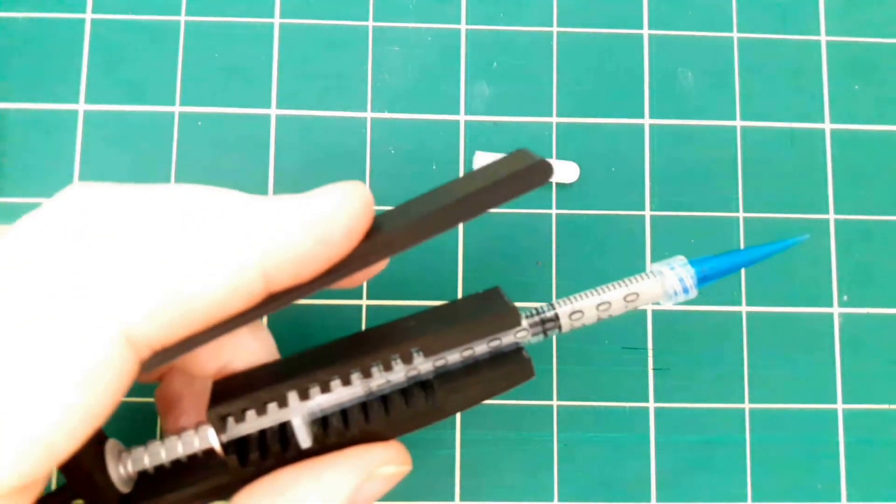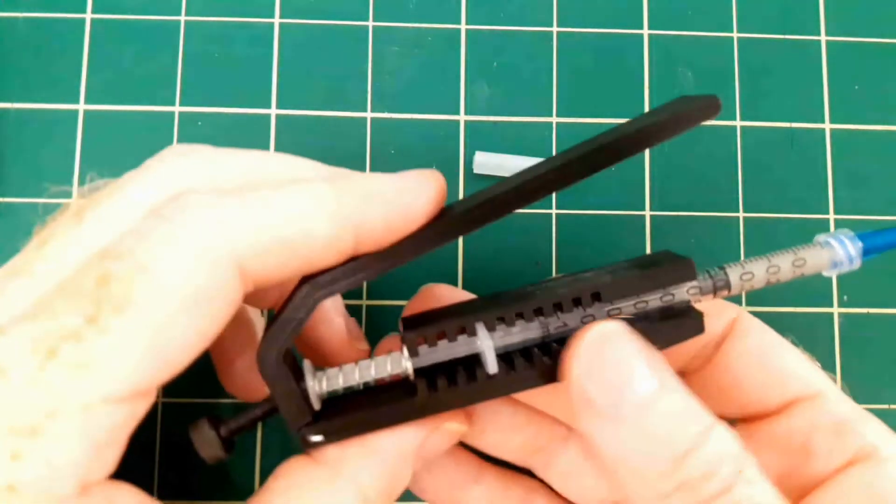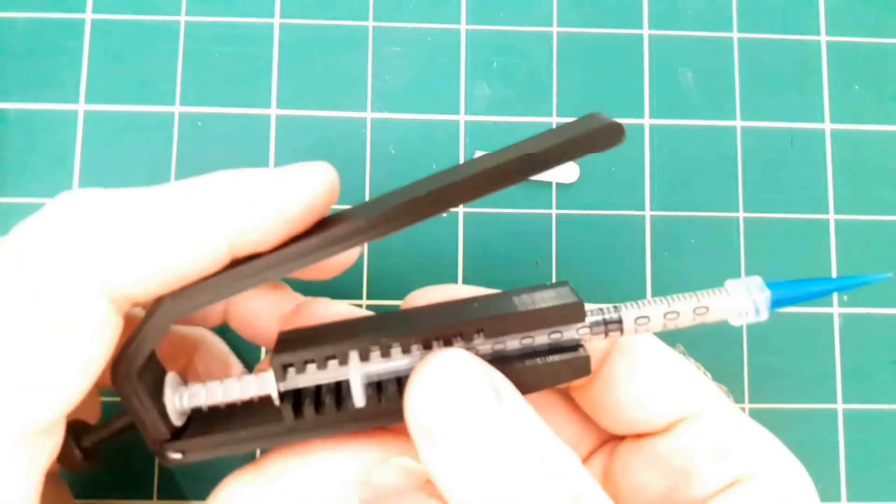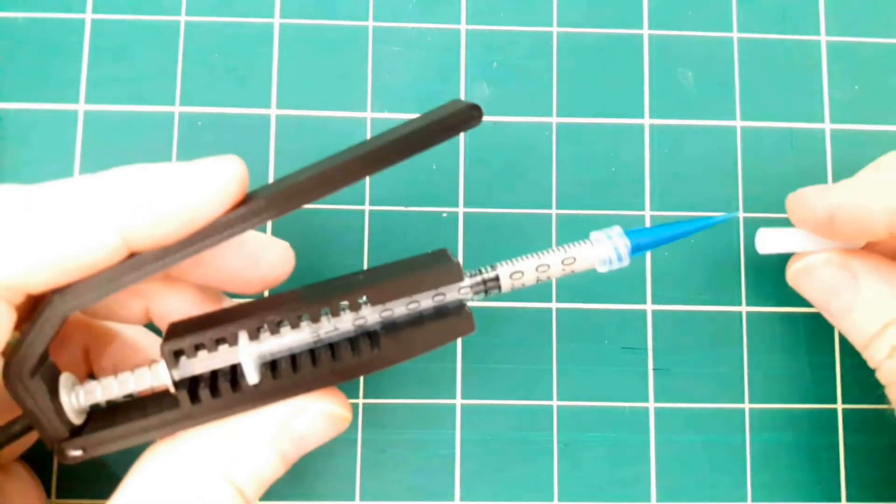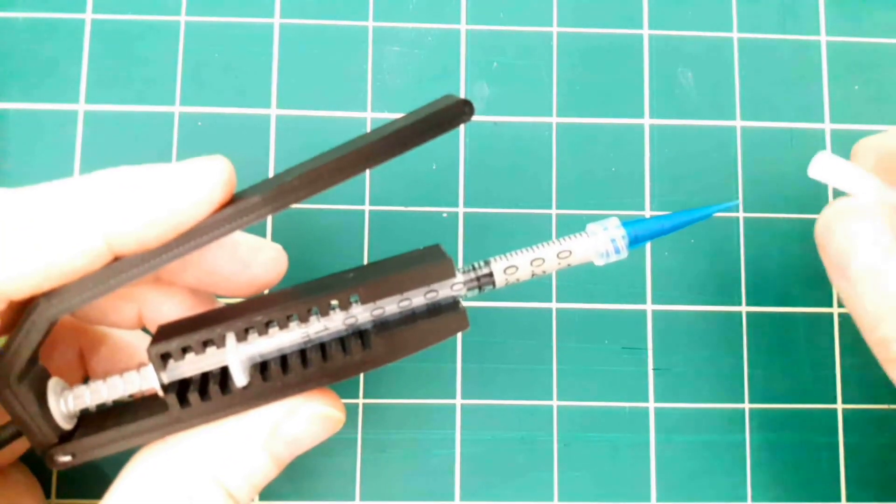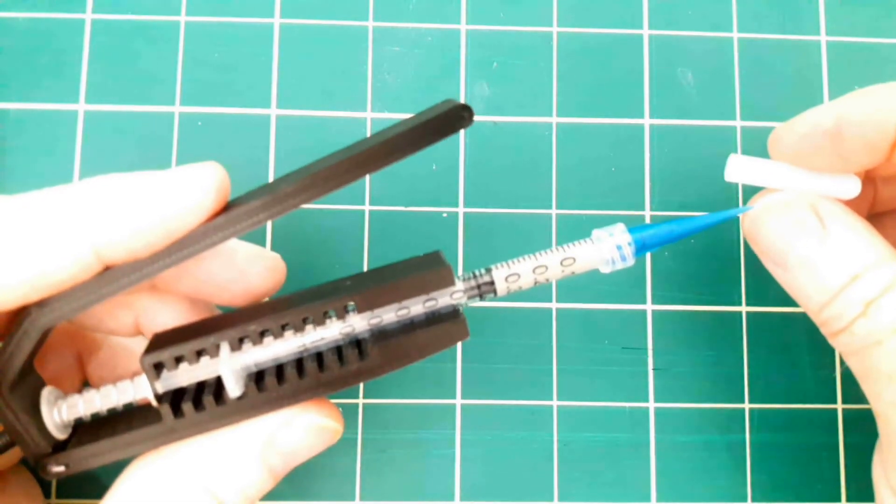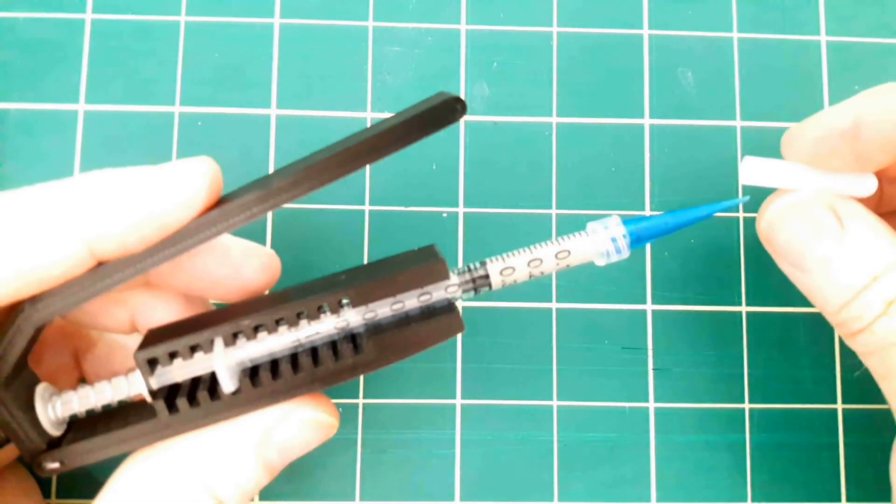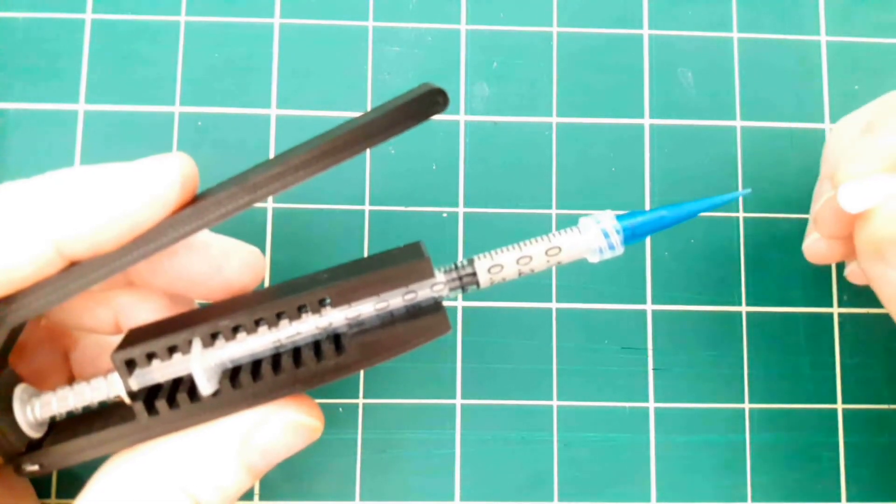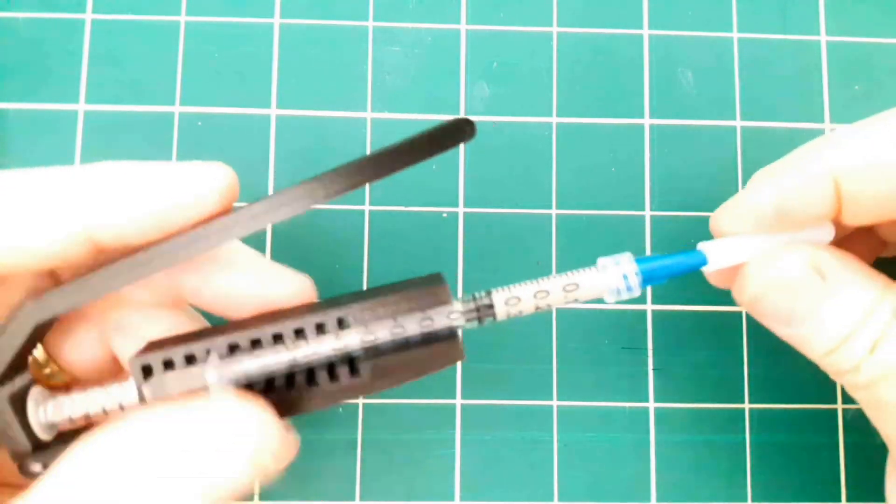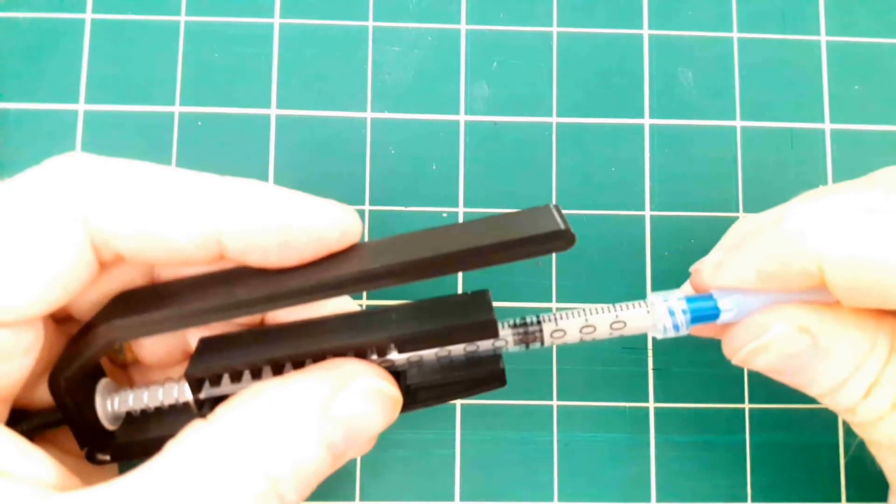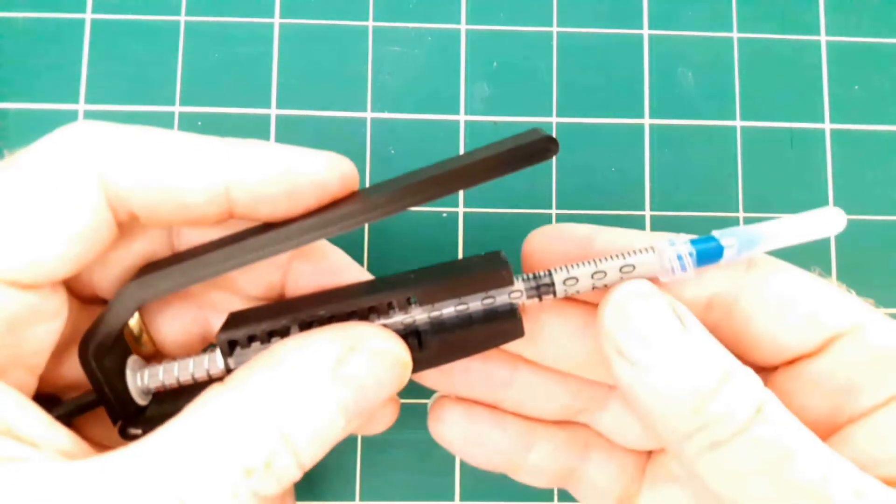So I'll be sure to put links to all of the parts that I used or sources for all the parts that I used in the video description and this is a silicone dishwasher rack tip replacement and I found that it makes a very effective cap for putting over top of this needle here.